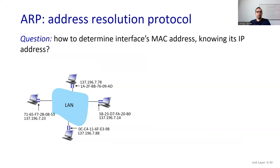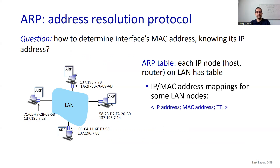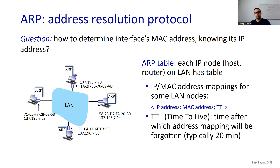ARP — Address Resolution Protocol. The question is: how do you determine an interface's MAC address knowing its IP address? Each IP node (host or router) on the local area network has an ARP table containing IP-to-MAC address mappings for some local area nodes. The table has IP address, MAC address, and TTL fields. TTL — time to live — is the time after which the address mapping will be forgotten, typically 20 minutes.